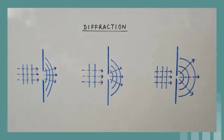In an activity using slits of different sizes, we can see that the deviation of light is more prominent when the dimensions of the aperture are comparable to the wavelength of incident light.